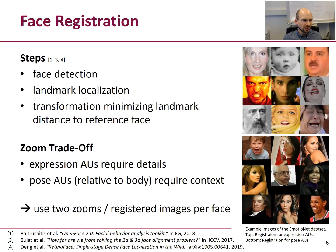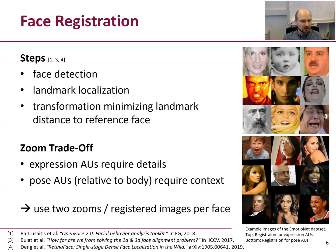The face registration is done in three steps: face detection, localization of 68 landmarks, and applying a transformation to the image which minimizes the landmark distance to a reference face. There is a trade-off regarding the zoom for registration — expression action units require details, while pose action units require context because they are defined relative to the body, not the camera. That's why we use two zooms, creating two registered images per face. In the upper part of the image you see examples of the expression registration, and in the lower part, the pose registration.